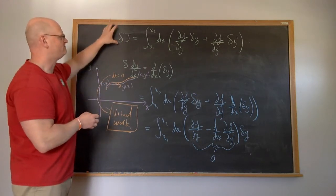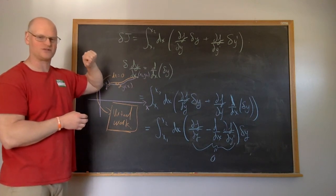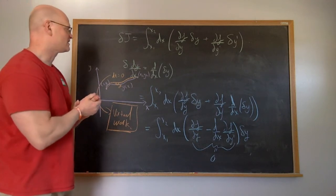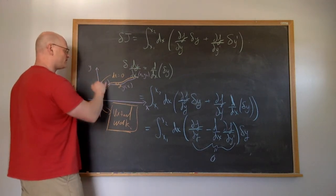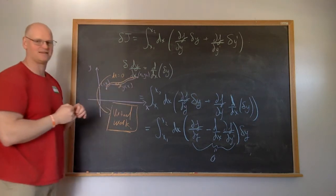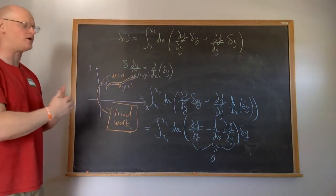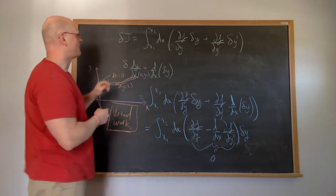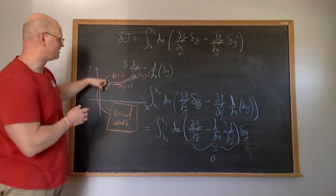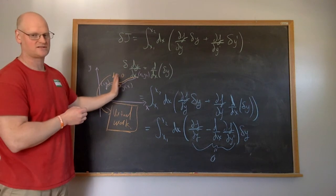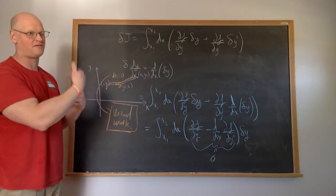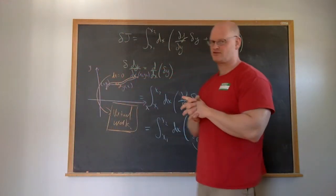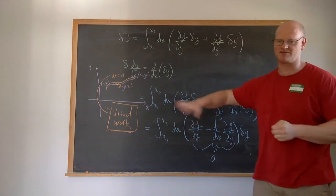We're seeing how that varies the functional integral to see the variation in the path. What has to be true is that even though we're varying the path, the function has to be the same at the boundary points, meaning it must vanish there. Whatever extremizes our function will find the path that gives us the shortest, minimum, or maximum value. This is what we call delta notation.